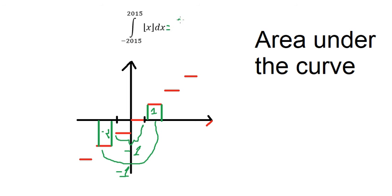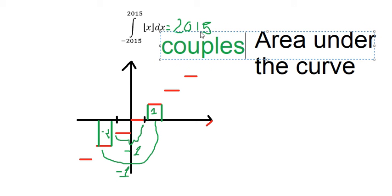2015 couples. There are 2015 couples, which means we have 2015 couples of negative one.